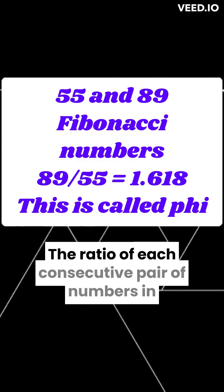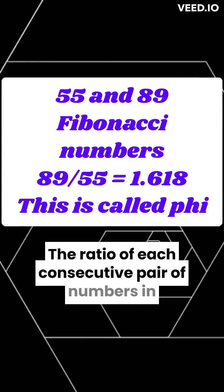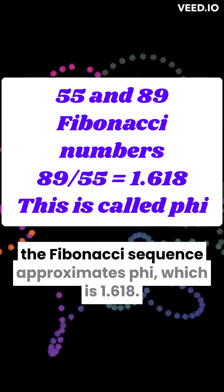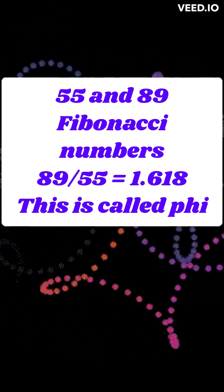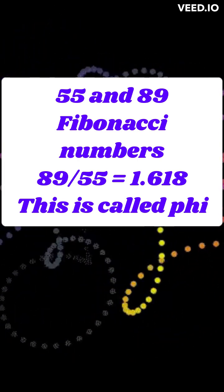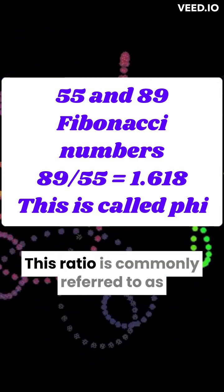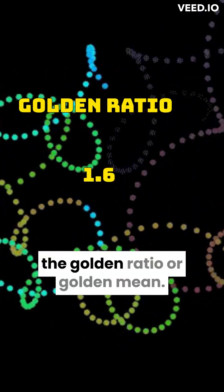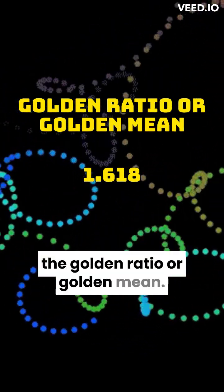The ratio of each consecutive pair of numbers in the Fibonacci sequence approximates phi, 1.618. This ratio is commonly referred to as the Golden Ratio or Golden Mean.